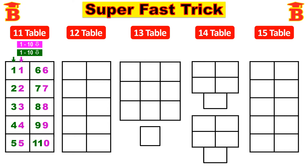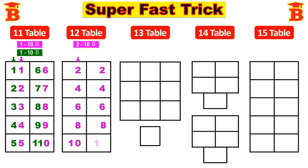Next let us write the 12 table. First step: write the even numbers from 2 to 10. The even numbers are 2, 4, 6, etc. So here we enter even numbers 2, 4, 6, 8, 10. Again, next column also we repeat the same: 2, 4, 6, 8, 10.